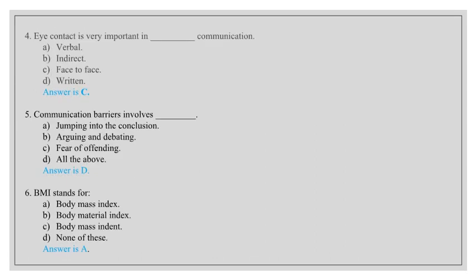Eye contact is very important in communication: verbal, indirect, face-to-face, written. Answer is C, face-to-face communication. Communication barriers and walls: jumping into the conclusion, arguing and debating, fear of offending, all the above. Answer is D, all the above.